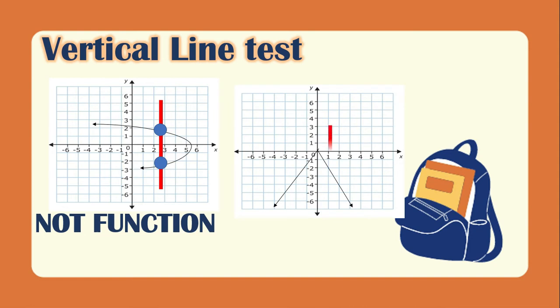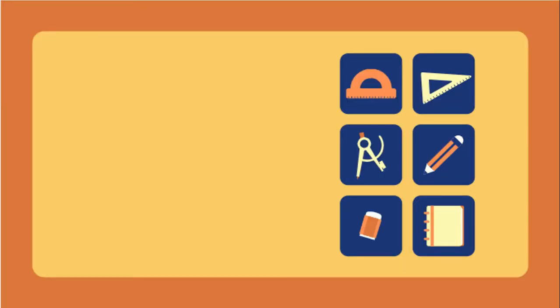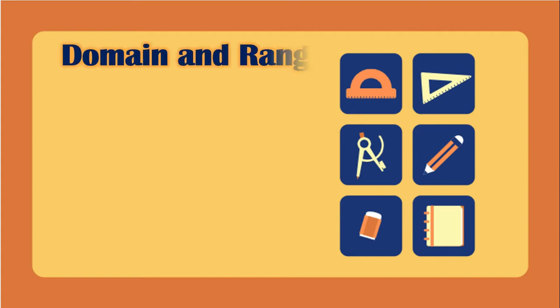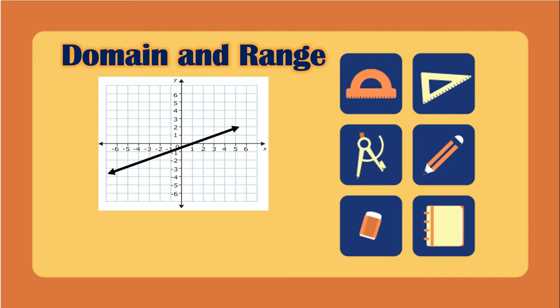For the third graph, if we draw a vertical line here it passes through the graph once, so this is considered a function. Next, how can we determine the domain and range of a graph? Looking at this graph, if we extend the graph...